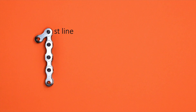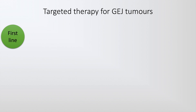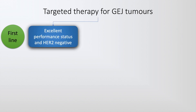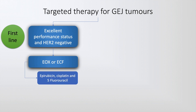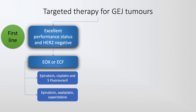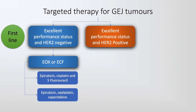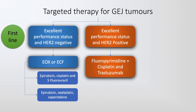The first-line therapy may be studied under the following headings. Patients with excellent performance status who are HER2 receptor negative may be considered for combination chemotherapy with EOX and ECF. ECF is epirubicin, cisplatin, and 5-fluorouracil; EOX is epirubicin, oxaliplatin, and capecitabine. Patients with excellent performance status who are HER2 receptor positive may be given fluoropyrimidine and cisplatin along with trastuzumab, the monoclonal antibody against the HER2 receptor, which dramatically increased survival in HER2-positive breast cancer.